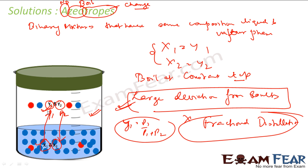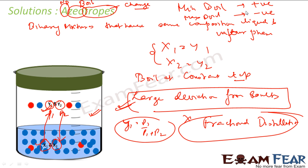There are two types of azeotropes: minimum boiling azeotropes and maximum boiling azeotropes. Both show large deviation from Raoult's Law. Minimum boiling azeotropes show a large positive deviation, and maximum boiling azeotropes show a large negative deviation from Raoult's Law.